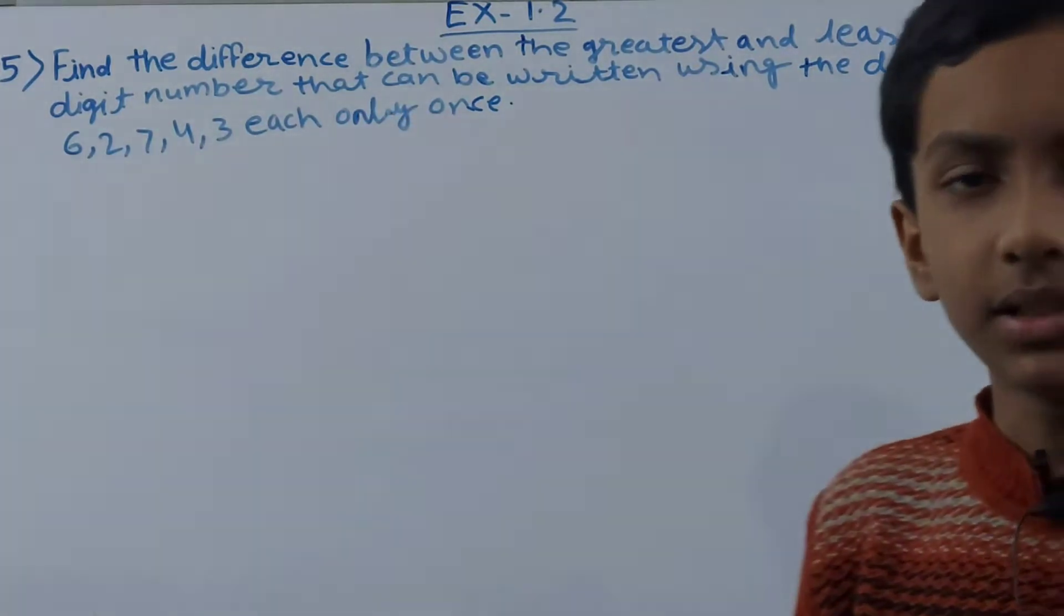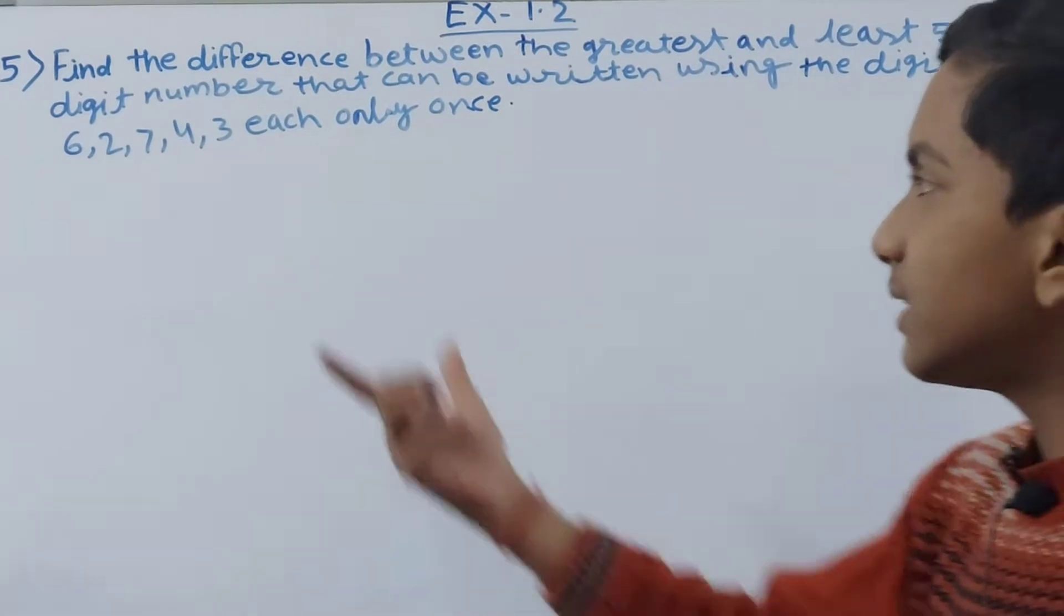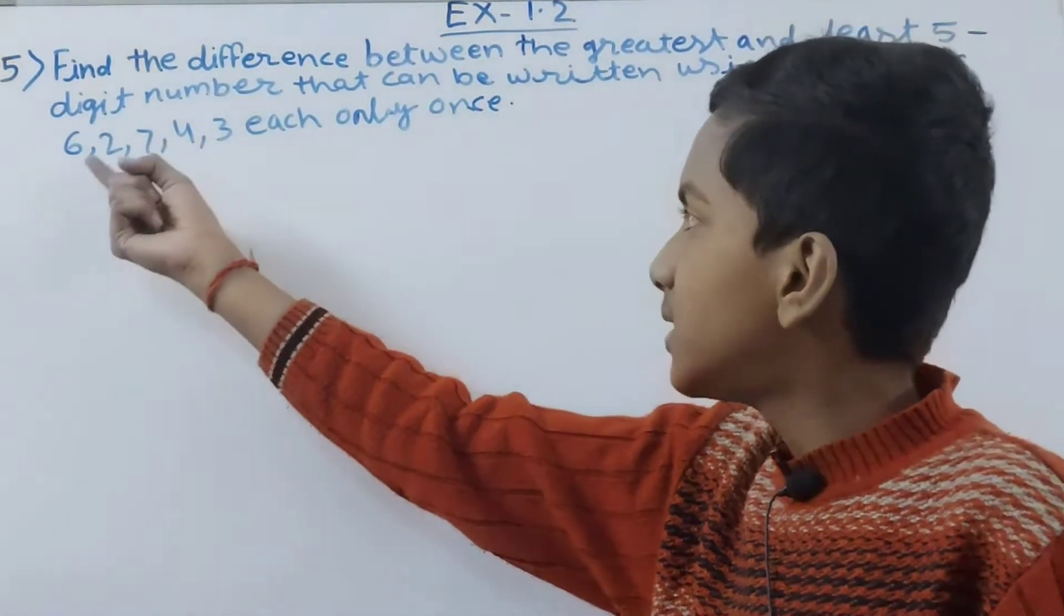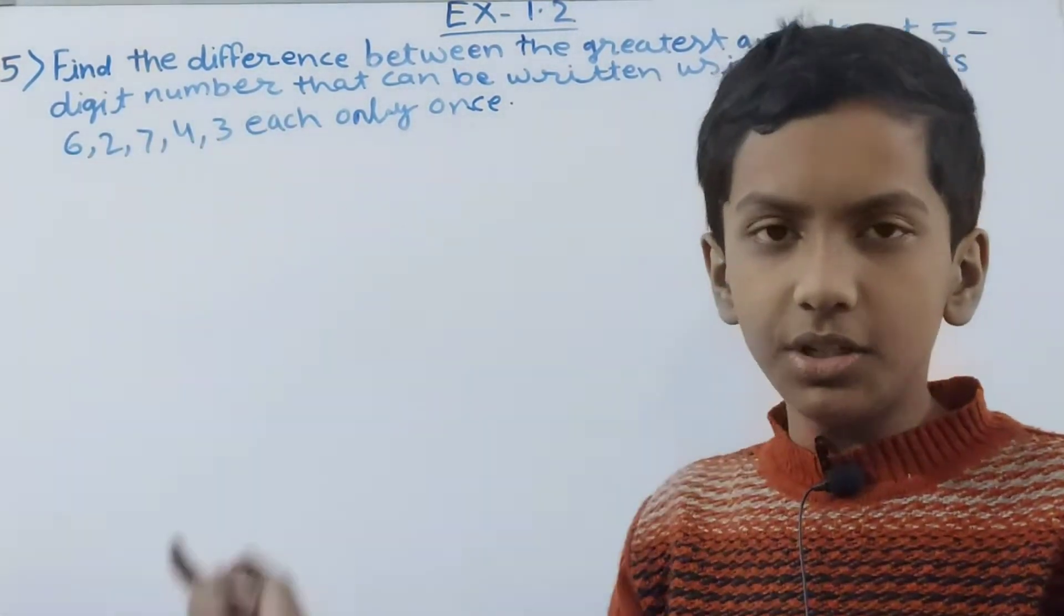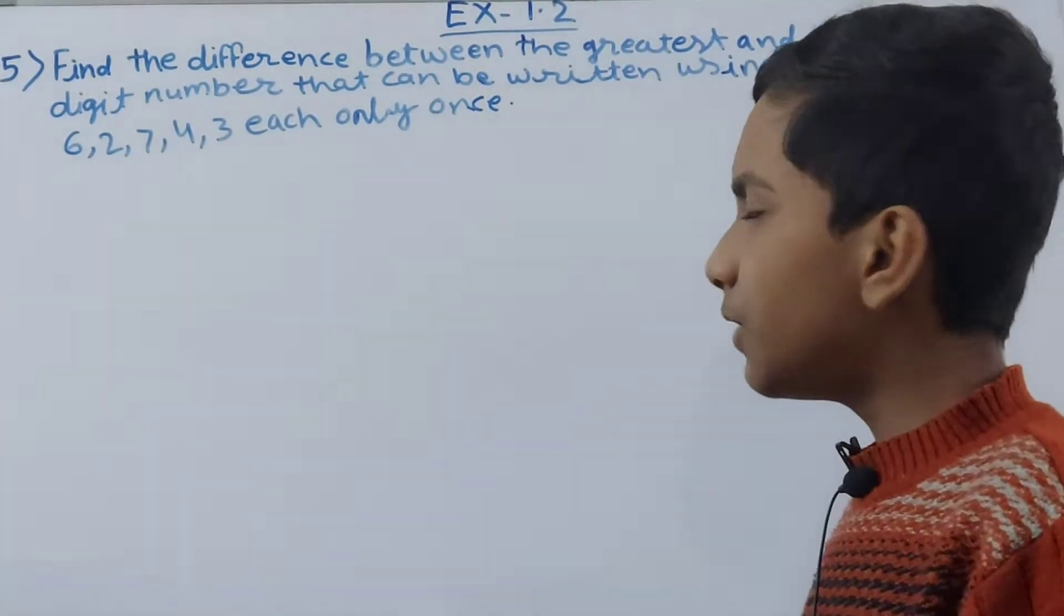Now try to understand the question first. It has given us some digits - they are 6, 2, 7, 4, and 3. These are the five digits we are given.